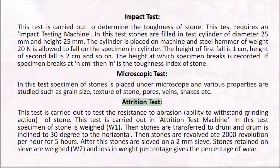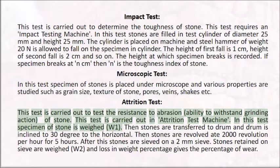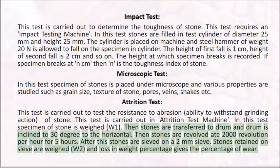Attrition Test: carried out to test the resistance to abrasion (ability to withstand grinding action) of stone. The specimen of stone is weighed (W1). Stones are transferred to a drum inclined at 30 degrees to the horizontal. Stones are revolved at 2000 revolutions per hour for 5 hours. After this, stones are sieved on a 2 mm sieve. Stones retained on the sieve are weighed (W2), and the loss in weight percentage gives the percentage of wear.